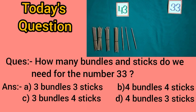Today's question: How many bundles and sticks do we need for the number 33? Four answer choices — A: 3 bundles, 3 sticks. B: 4 bundles, 4 sticks. C: 3 bundles, 4 sticks. D: 4 bundles and 3 sticks. Students, look at the picture. There are 3 on the place of tens and 3 on the place of ones. We need 3 bundles and 3 sticks. So the correct answer is A: 3 bundles, 3 sticks.